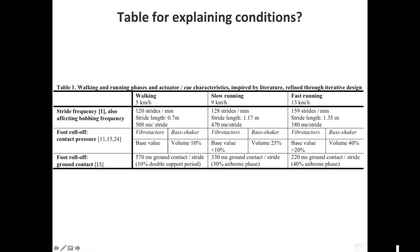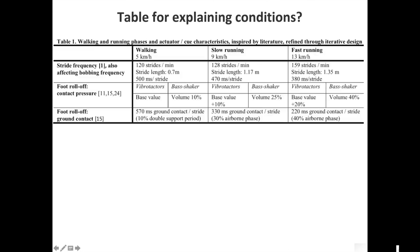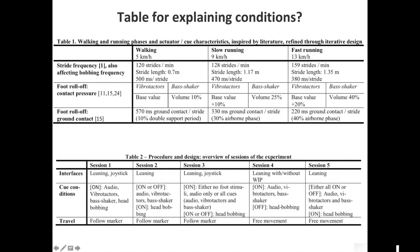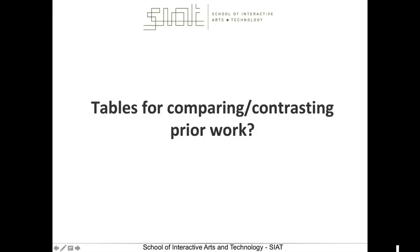If you have different conditions in different examples, a comparison table can be useful — but it needs to be explained in text to some degree, especially the motivation for why you did all of these things. Or if there were five different experiments each comparing two different interfaces, different conditions, and different tasks, a summary table can help.